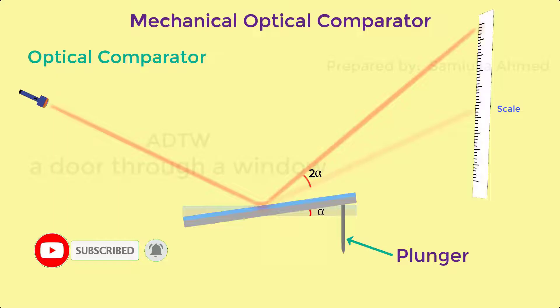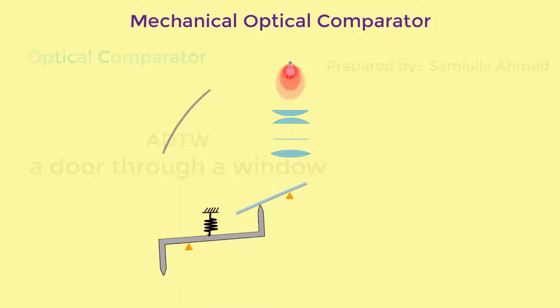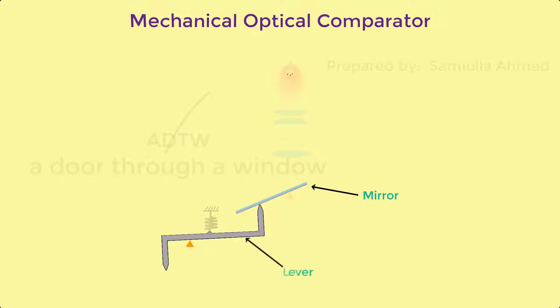Since you have got an idea about working principle of optical comparators, now we will see how the mechanical optical comparator works. Mechanical optical comparator is same as optical comparator, but the plunger in the mechanical optical comparator will be replaced with the pivoted lever.